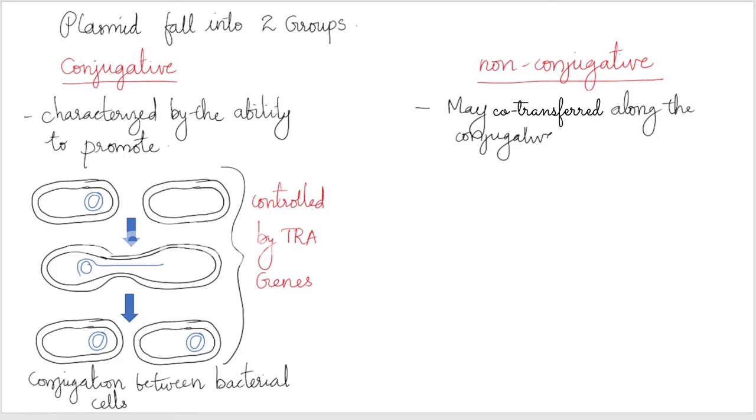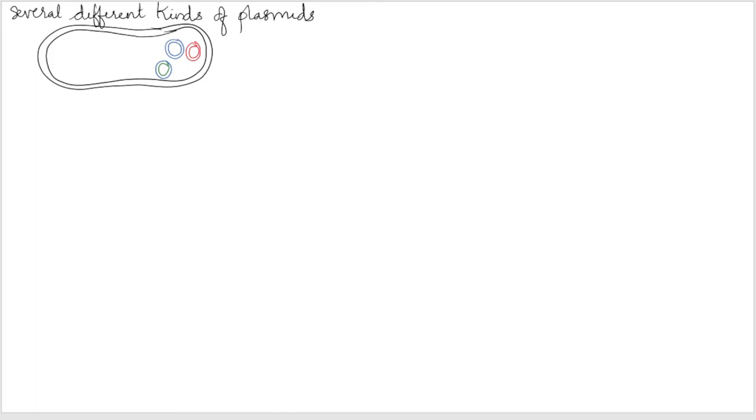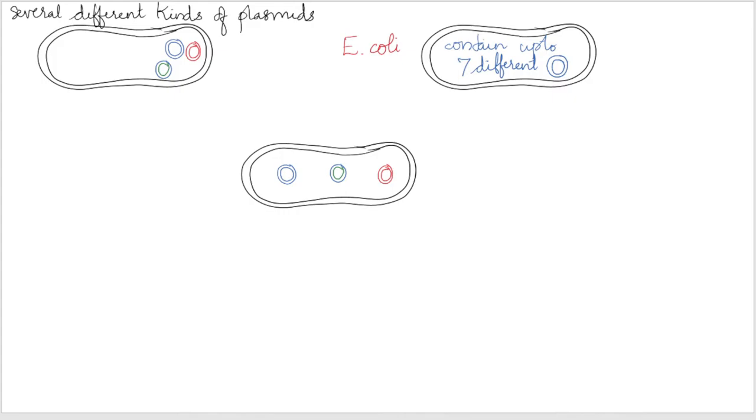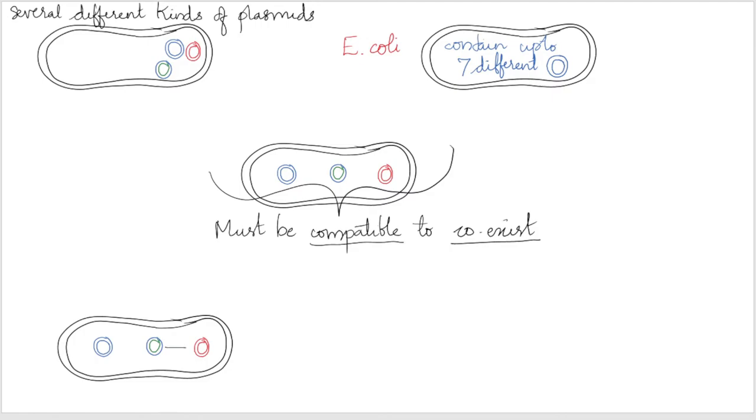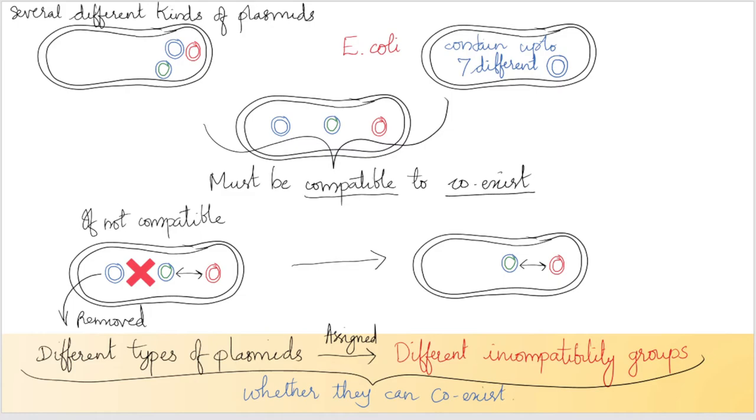However, a non-conjugative plasmid may under some circumstances be co-transferred along with a conjugative plasmid when both are present in the same cell. Several different kinds of plasmids may be found in a single cell, including more than one different conjugative plasmid at any one time. In fact, cells of E. coli have been known to contain up to seven different plasmids at once. To be able to coexist in the same cell, different plasmids must be compatible. If two plasmids are incompatible, then one or the other will be rapidly lost from the cell. Different types of plasmids can therefore be assigned to different incompatibility groups on the basis of whether or not they can coexist, and plasmids from a single incompatibility group are often related to each other in various ways.